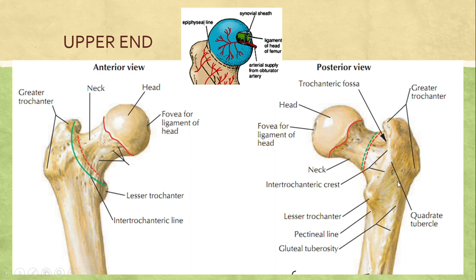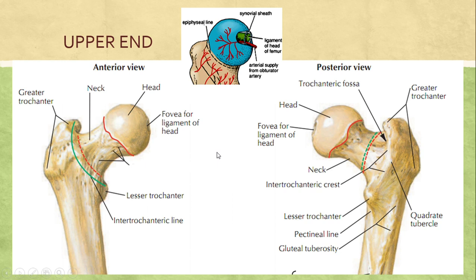On the intertrochanteric crest there is a small elevation called the quadrate tubercle, where the quadrate muscle is attached. The larger elevation is called the greater trochanter and the small conical elevation pointed posteriorly is called the lesser trochanter, and they have important muscle attachments. It can clearly be seen that the head and neck of the femur are not in line with the shaft — this bending is measured as the angle of inclination. Additionally, the upper end makes an angle with the lower end called the angle of torsion.